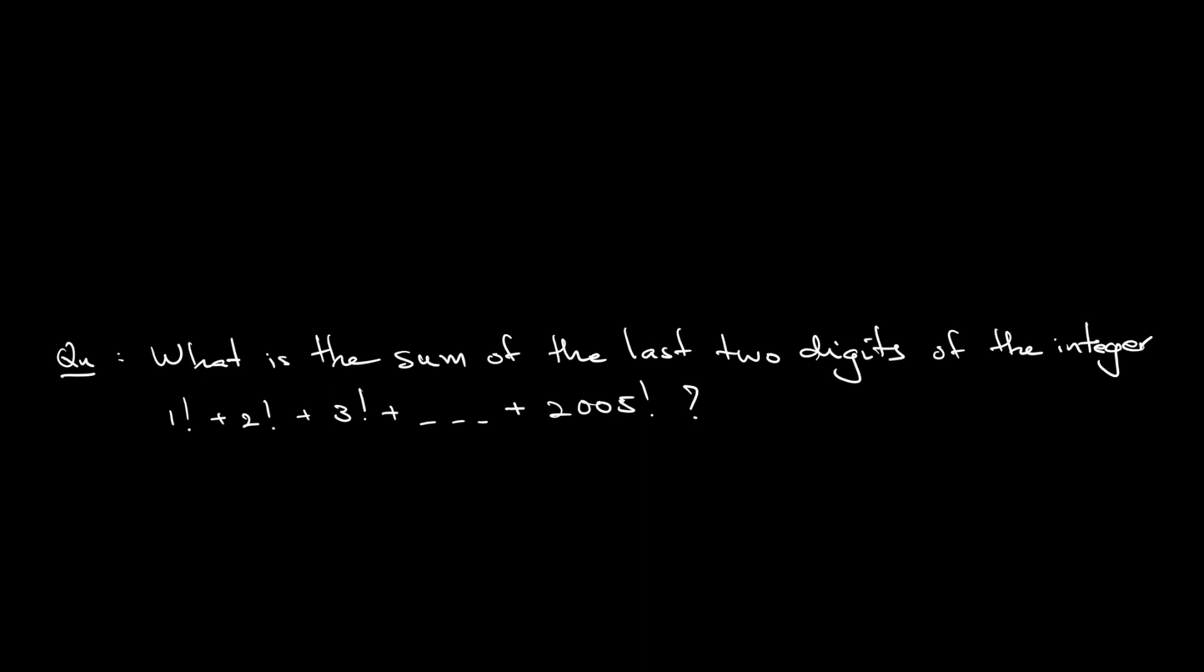This is a type of algebra question. Let's attempt this question together. We can easily check that when n is 10 and above, n factorial will always end up with two digits that are 0, 0. So n factorial will end with two zeros.